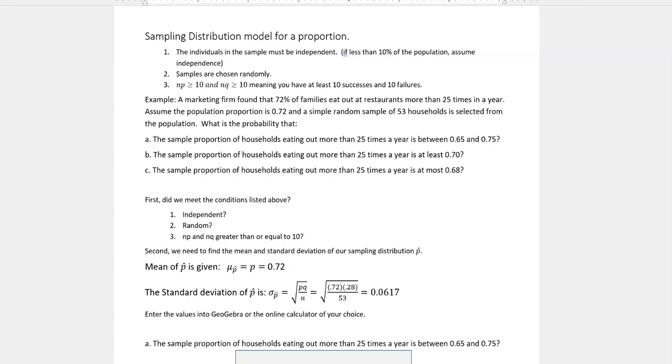Secondly, we need to determine what is the mean and standard deviation of our sampling distribution, which we're calling p hat. The mean of the sampling distribution is given as just p. So what they give you as a probability is your mean, in this case 0.72.